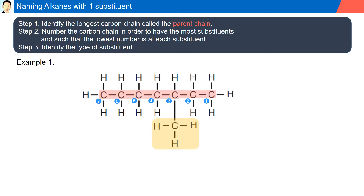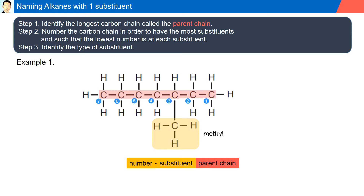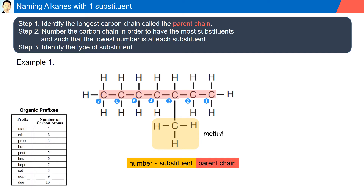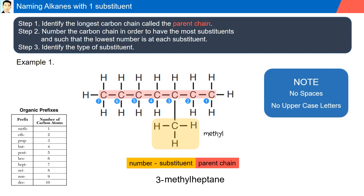Next, our numbering scheme is established. We identify our substituent group as methyl because there is one carbon. We will name our structure by adding the parent chain, the substituent, and the number where the substituent is located. Separating the number and the substituent will have a dash. The parent chain is seven carbons, so it's called heptane. Our substituent is a methyl group, so it will be known as methyl heptane, and the substituent group is located on carbon number three. The name for the alkane with one substituent is 3-methylheptane. Note there are no spaces, and also there are no uppercase letters in the name.